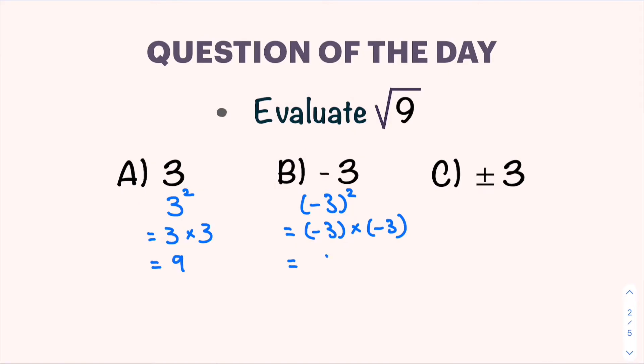C: plus minus 3 squared has two cases, where one is 3 squared and the other is negative 3 squared, and we have confirmed that they both give you the answer 9. So does that mean that the answer is C, plus minus 3? Actually, it is not. The only correct answer to this question is A.